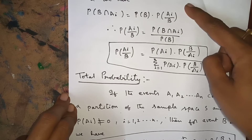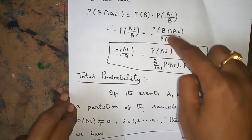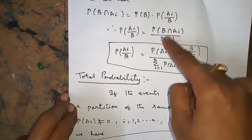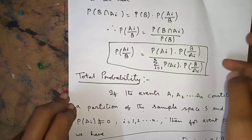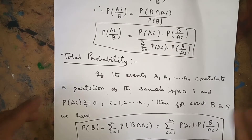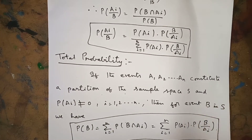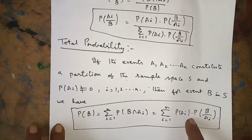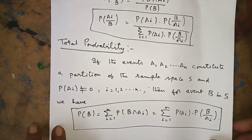The next concept is the Total Probability Theorem. If A₁, A₂, ..., Aₙ constitute a partition of the sample space S and P(Aᵢ) ≠ 0, then for any event B in S: P(B) = Σᵢ P(B ∩ Aᵢ). The denominator in Bayes' formula is this Total Probability.